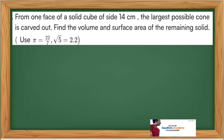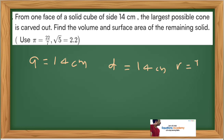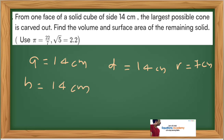From one phase of a solid cube of side 14 centimeters, the largest possible cone is carved out. Find the volume and surface area of the remaining solid. Use pi equal to 22/7 and root 5 equal to 2.2. The side of the cube a is 14 centimeters. The diameter of the cone equals the edge of the cube, so diameter is 14 centimeters, giving radius r equal to 7 centimeters. Height h of the cone equals the side of the cube, that is 14 centimeters.